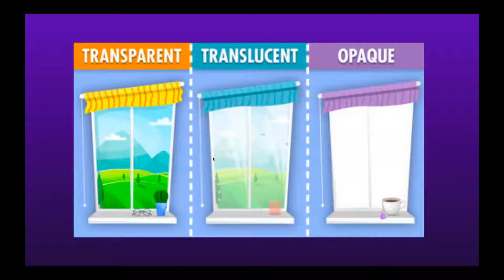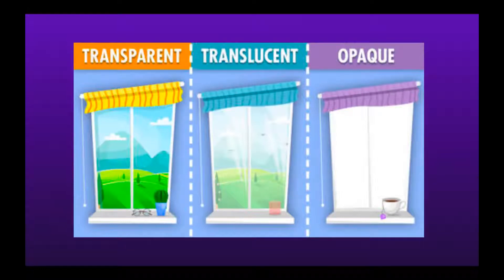You're going to hear me use three words: transparent, translucent, and opaque. Transparent is when you can see through something completely, like a window. Translucent would be something like a tinted window or a window with film on it — you can see some through it but not everything, and some light gets through while some is blocked. Then opaque is like if you had the blinds or curtains drawn — you can't see through them at all; it's completely solid.